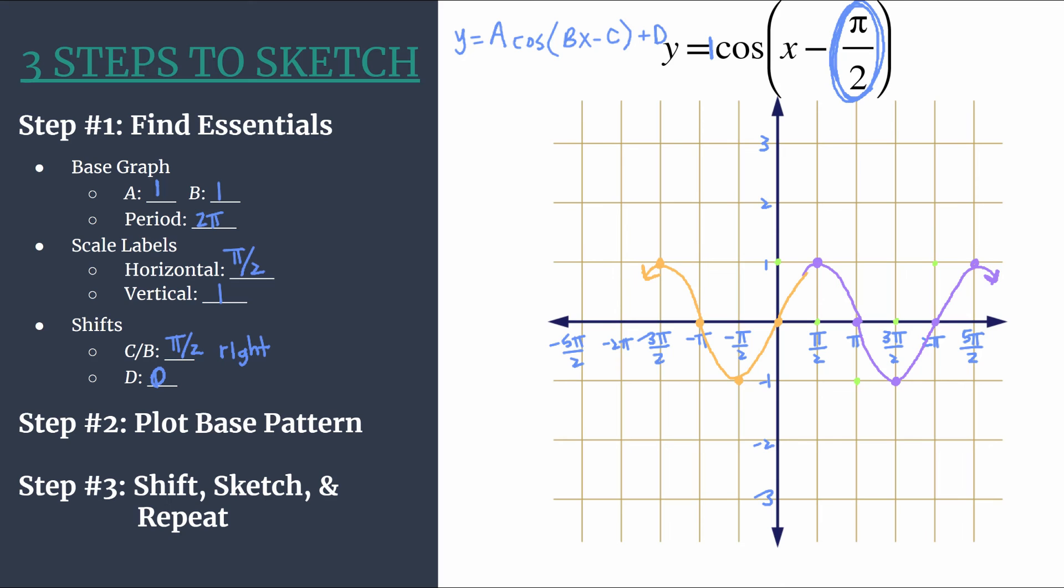One interesting thing to look at. Remember, B told us how many cycles should happen between zero and two pi. And even though they're different cycles, part or parts of different cycles from how we graphed it, you can see that a full cycle, all of the parts that you need, all of the key pieces in the pattern, two zeros, a max and a min, you have one cycle happening between zero and two pi.